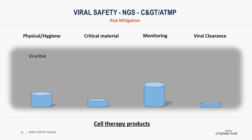Looking at the risk profile of cell therapy products, you can essentially forget about viral clearance — there is no downstream processing that brings in any clearance capacity. This barrier is almost non-existent. With respect to critical materials, there are even more entry points for the virus to enter the process than for gene vectors. The viral risk from the very beginning, based on the starting material — human primary cells — is definitely higher than for gene vectors or recombinants.